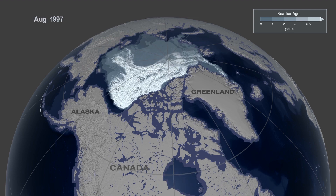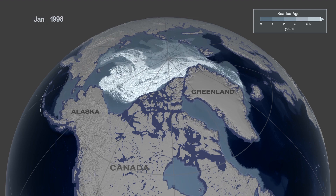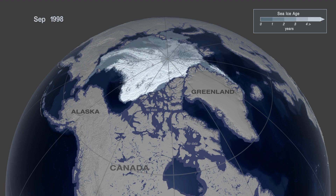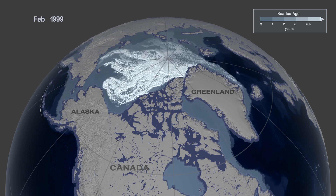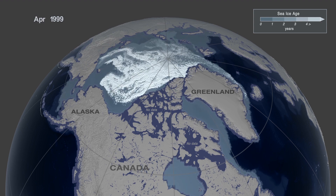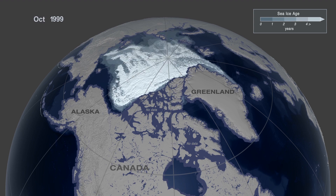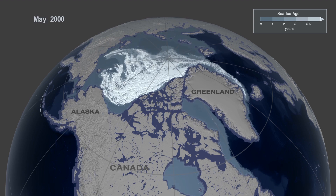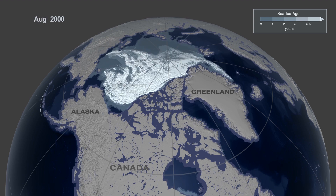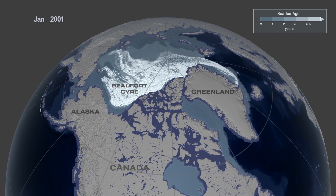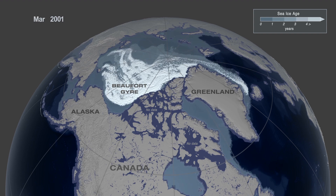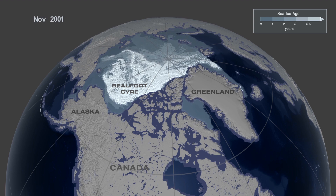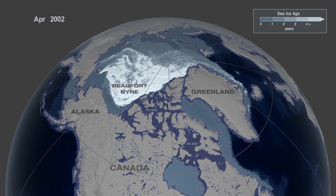The ice gets replenished within the Arctic because some of the ice survives each summer and grows older. Particularly in a region north of Alaska called the Beaufort Sea, where the ice spins around in a clockwise direction called the Beaufort Gyre. That ice can keep spinning around, oftentimes for several years, gradually getting older and thus getting thicker.